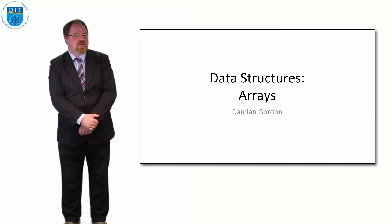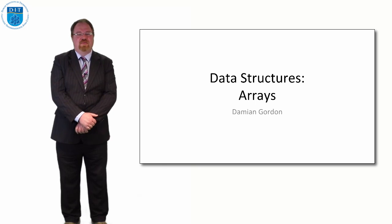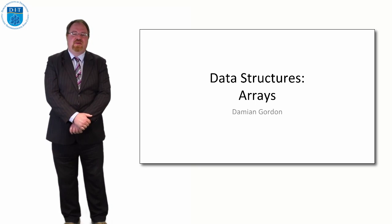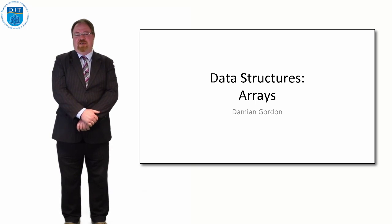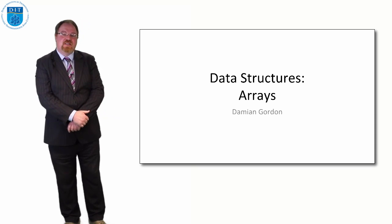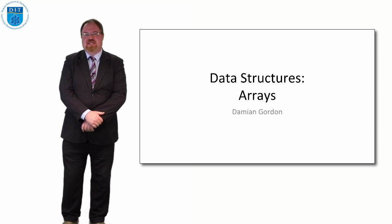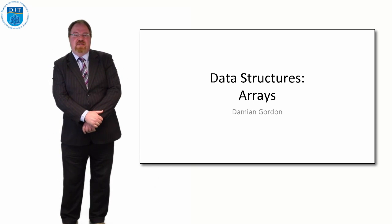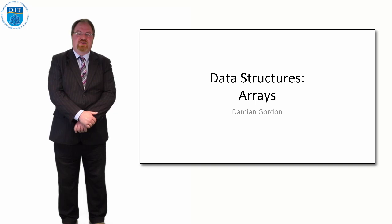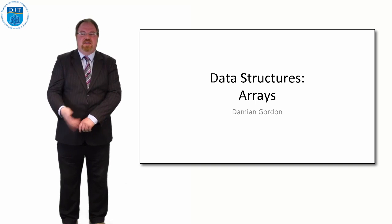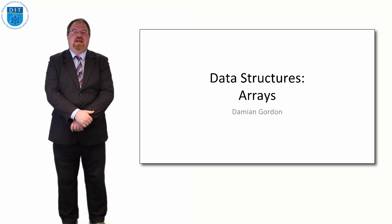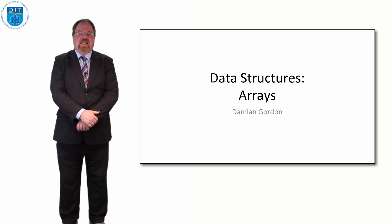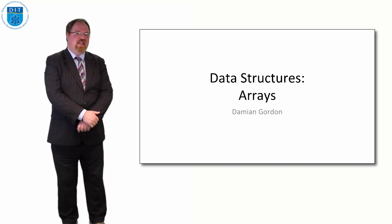Hello everybody, welcome to this episode of Programming and Algorithms. In this episode we're going to look at a new special kind of variable called an array — it's the first complex data structure we look at. The variables up till now have been simple structures like a boolean, storing a single value, whereas an array is a collection of those values.